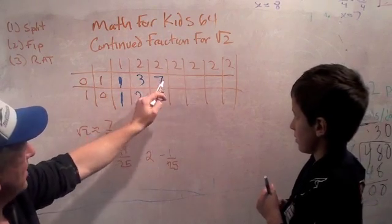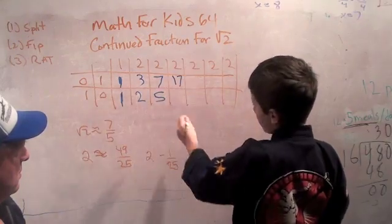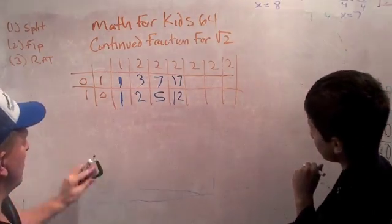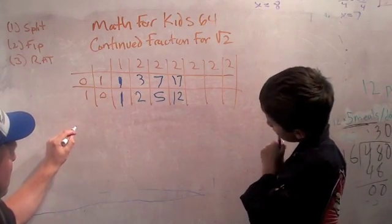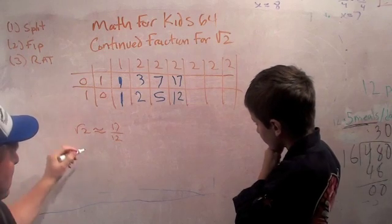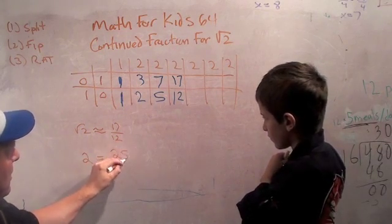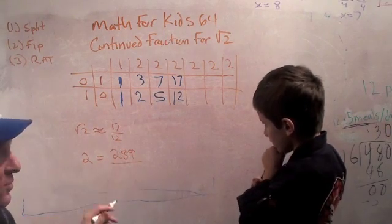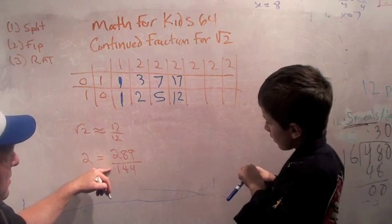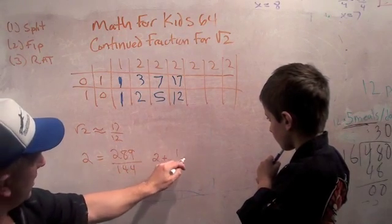Let's see if we can do even better. 2 times 7 is 14, plus 3 is 17. Over 2 times 5 is 10, plus 2 is 12. So the square root of 2 is approximately 17 twelfths. The square root of 2 squared is 2, and 17 squared is 289, and 12 squared is 144. Is 289 over 144 very close to 2? Yes — in fact, it's 2 plus 1 over 144. Pretty close.